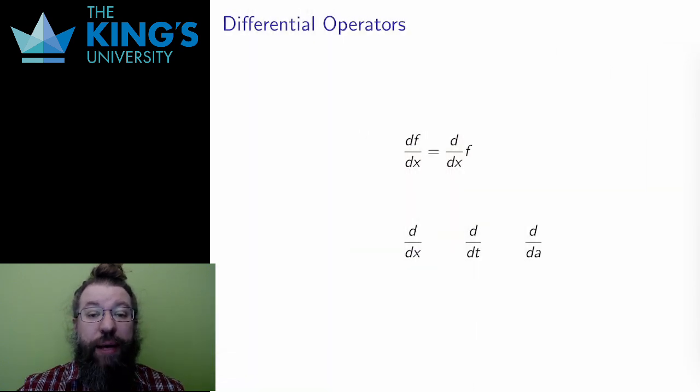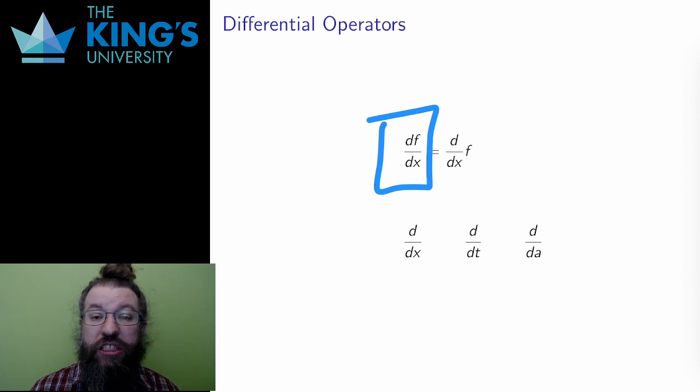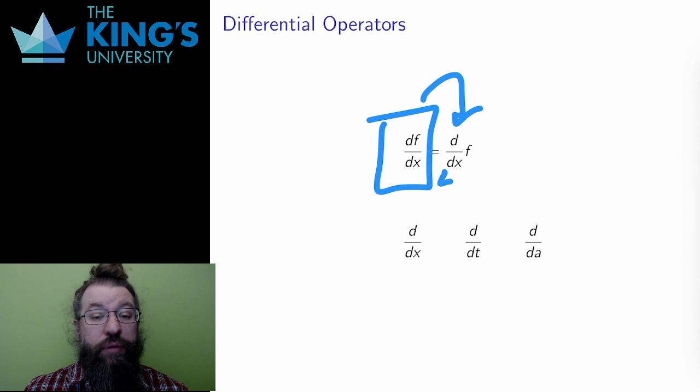Let me go back to the Leibniz notation for a moment. df over dx is the derivative, the new function which measures the rate of change of the previous function. I can adjust this notation slightly, pulling the d over dx out in front of the function f.